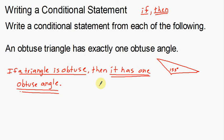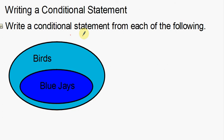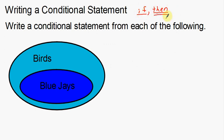Let's do another example. This time I have a Venn diagram to help me out. Again, I'm writing a conditional statement — an if-then statement. The if part is going to be my hypothesis, and the then part is going to be my conclusion. The example involves birds and blue jays.